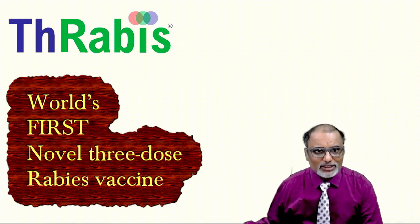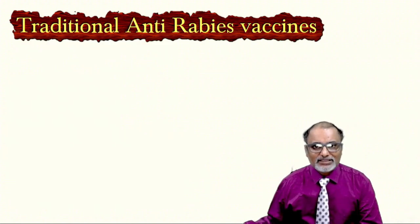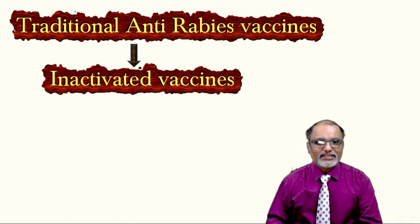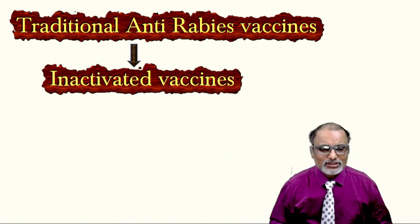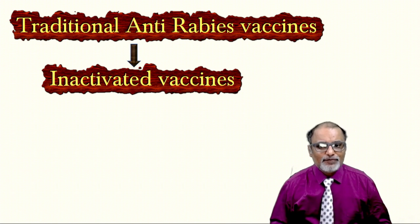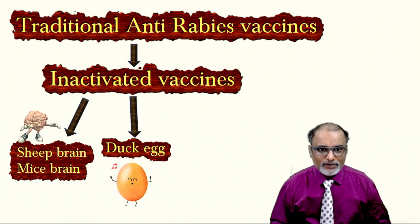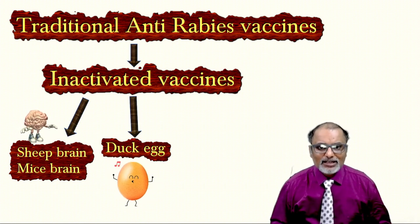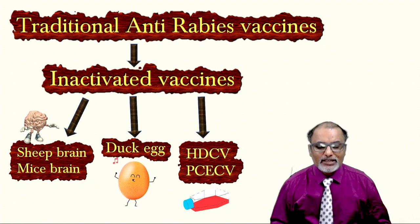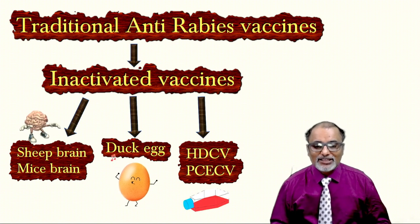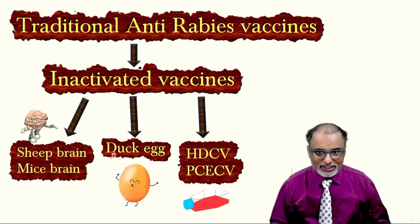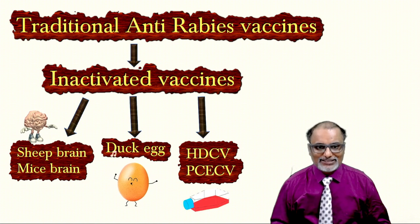The existing vaccines are called traditional anti-rabies vaccines. They are all inactivated vaccines. The sources include sheep brain or mice brain — we call them neural vaccines — and egg-based vaccines from duck egg. Currently we are using cell culture vaccines: either human diploid cell culture vaccine or purified chick embryo cell culture vaccine.